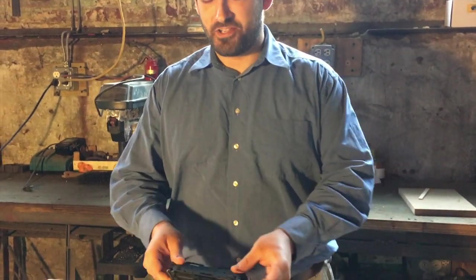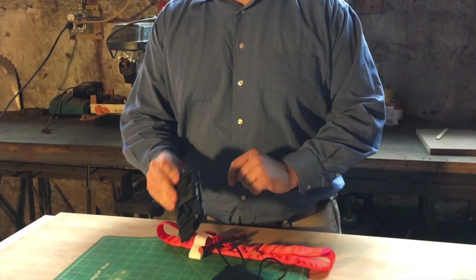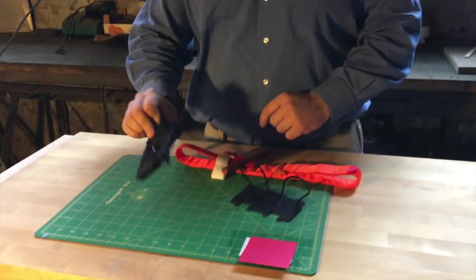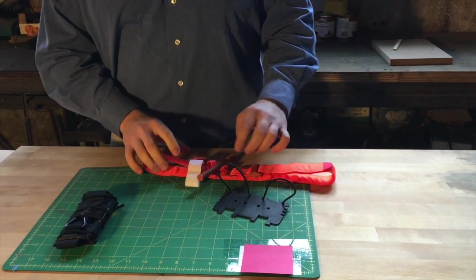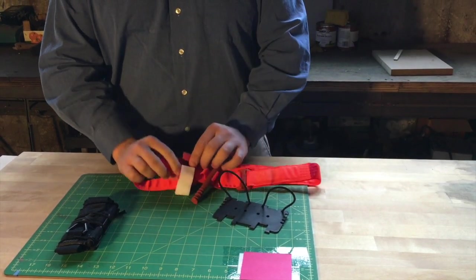Hey guys, last time we showed you how to fold the SOFTT-W as flat as possible for the PHLster Flatpack, getting it really nice and thin. A lot of people carry the CAT style tourniquet, and while you won't get it quite as small due to the bulk of the hardware,